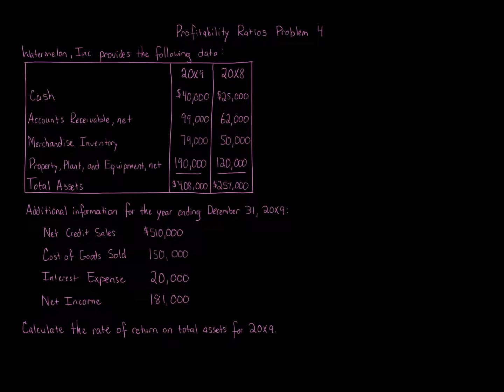There's a table broken down by 20x9 information and 20x8 information. Cash: 20x9 $40,000, 20x8 $25,000. Accounts Receivable Net: 20x9 $99,000, 20x8 $62,000. Merchandise Inventory: 20x9 $79,000, 20x8 $50,000. Property Plant and Equipment Net: 20x9 $190,000, 20x8 $120,000. Total Assets: 20x9 $408,000, 20x8 $257,000.